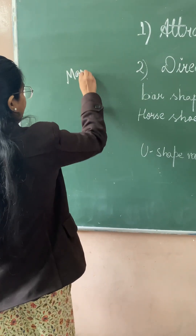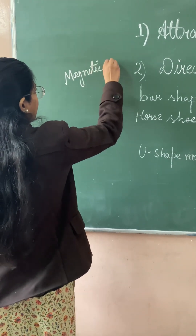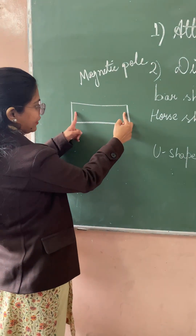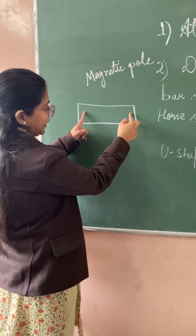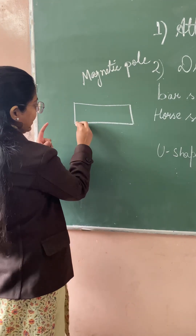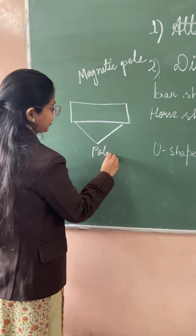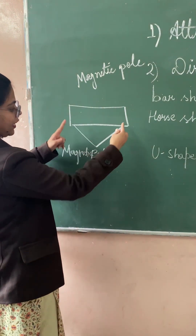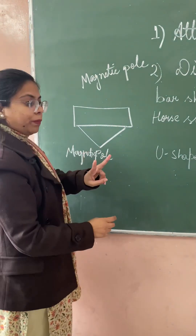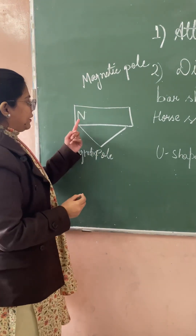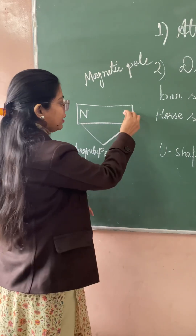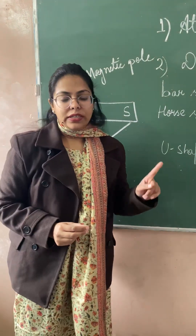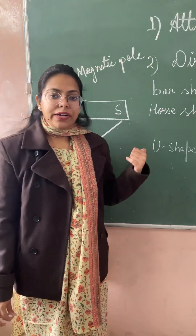So suppose this is a bar magnet. As I told you, at its ends the magnetic property will be maximum. These ends are known as magnetic poles. In a magnet there are two poles. The first is North Pole, which is represented by capital N, and another is South Pole, which is represented by capital S. This is all about attractive property.